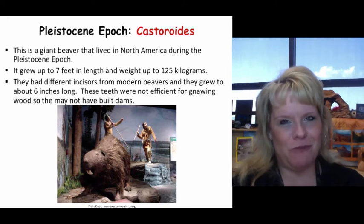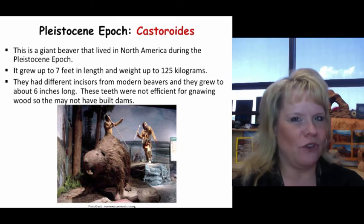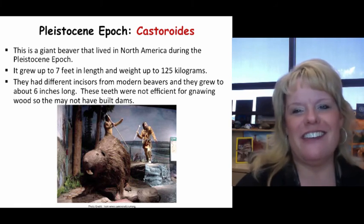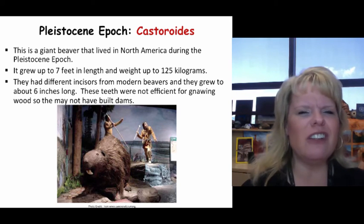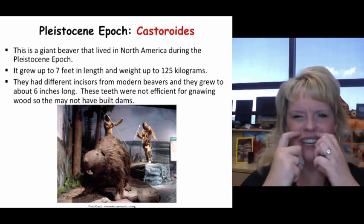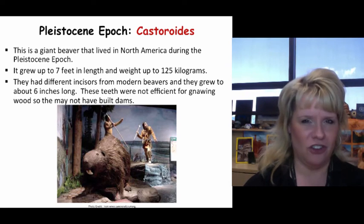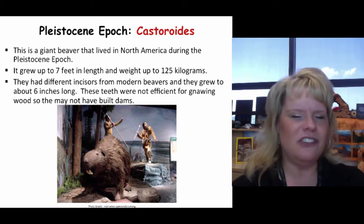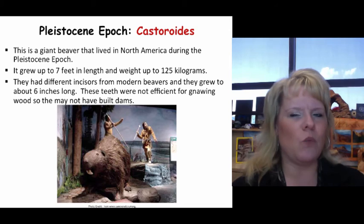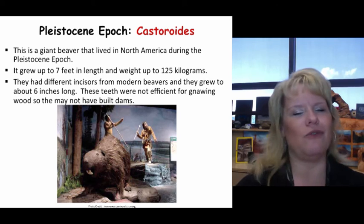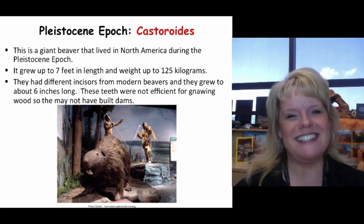Castoroides is another famous Pleistocene animal — the giant beaver. These are found in North America and lived throughout the Ice Age. They got up to 125 kilograms and 7 feet in length, with large canine teeth about 6 inches long — not just the saber-toothed cat had big fangs. These teeth were not efficient at gnawing wood, so these guys may or may not have built dams. Nevertheless, they were walking around rivers during the Pleistocene epoch.